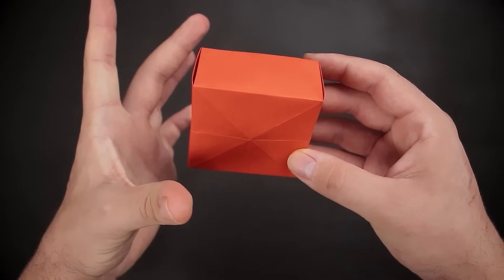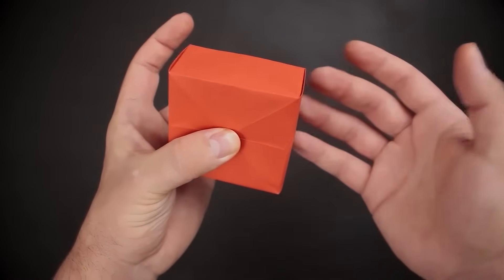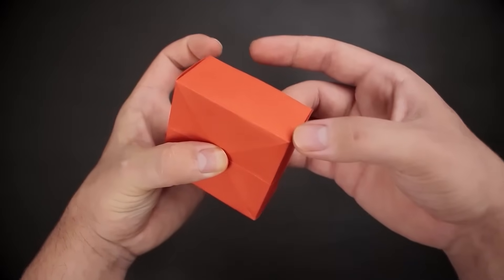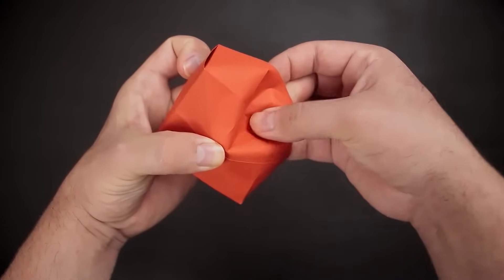So, with one hand, we hold the paper closed very tightly. And then, let's push the corner like this, crumpling the paper.